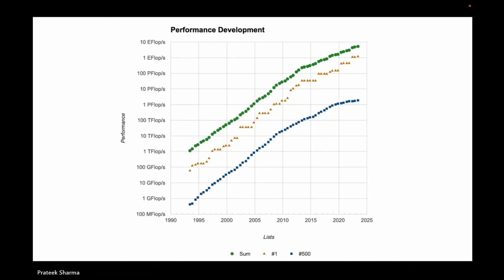Another chart shows performance over time. The combined performance of all 500 computers starts at around one teraflop per second — 10^12 calculations per second — back in 1993, and has grown dramatically since. The top performer is shown separately. When one system dominates for a long time, you see a saturation — for example, the Earth Simulator in Japan held the top position for a long time when I was a PhD student.